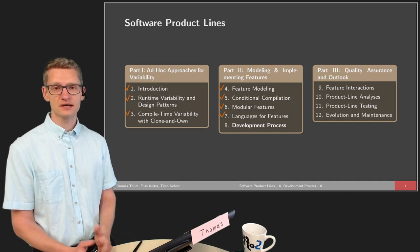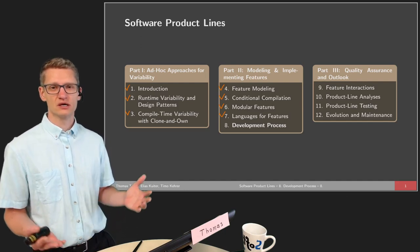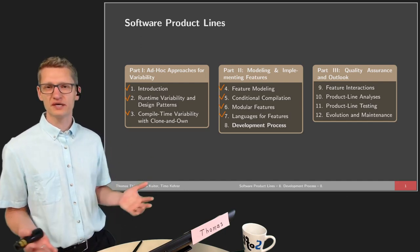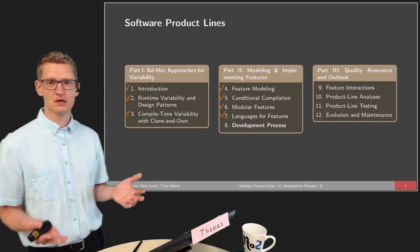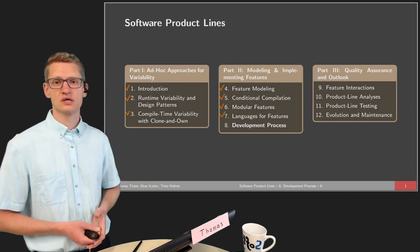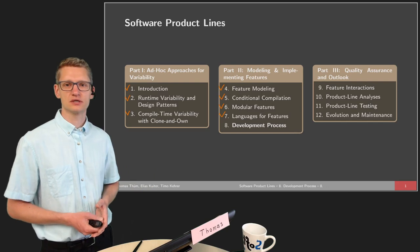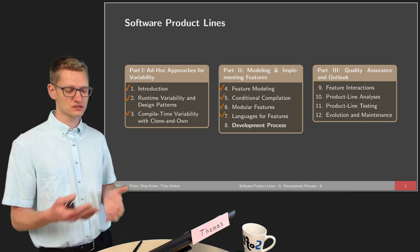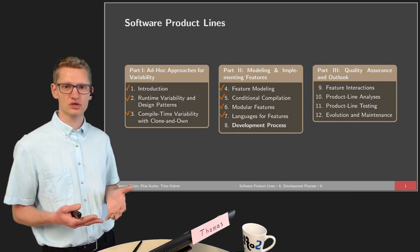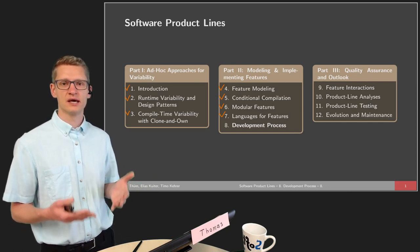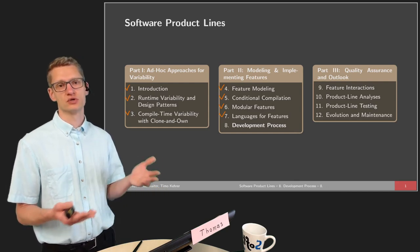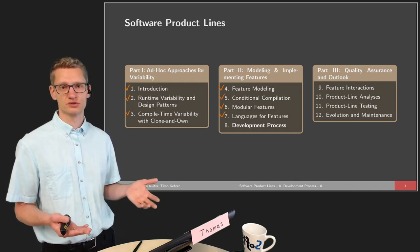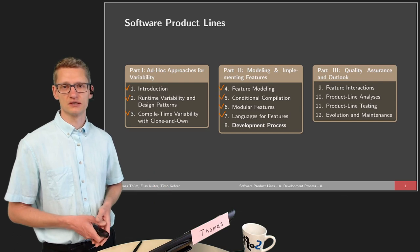Then we talked about modeling of features of the configuration space, and then we talked about different implementation techniques to realize the vision of software product lines in the last three lectures. In this lecture we want to give an overall picture of how the development happens by means of any of those implementation techniques, but also how it is connected to feature modeling.